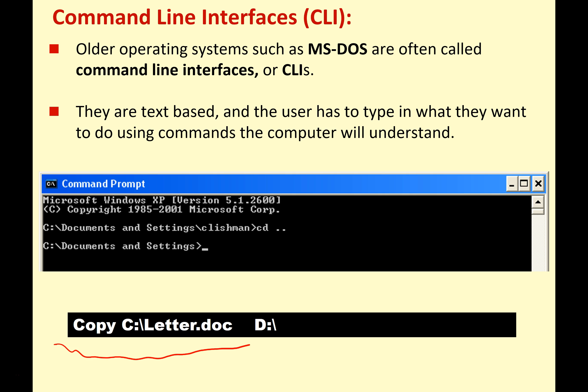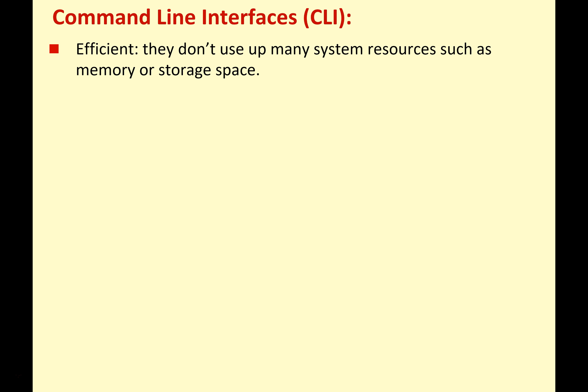Here's a simple example: we're just copying the letter.doc file from the C drive to the D drive. We have to remember it's the copy command, we have to have the path, the name of the document, and the path we're copying it to. So you can see there's quite a lot to remember — it's not easy like just dragging and dropping in a modern operating system. Command line interfaces are very efficient; because you're only using a text interface, they don't use up a lot of system resources — not a lot of memory, storage space, or CPU time.